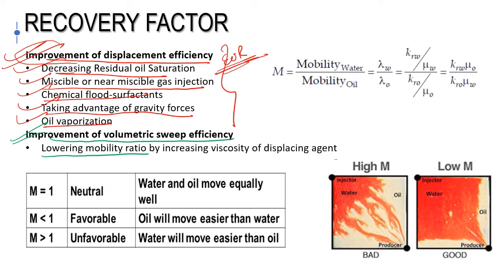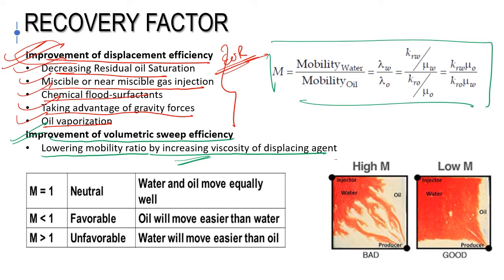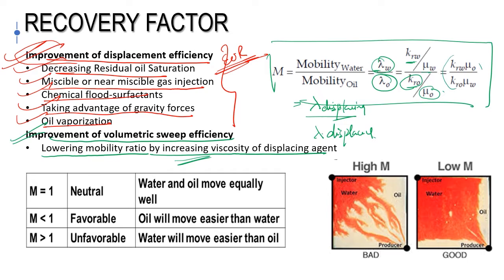To improve volumetric sweep efficiency, I go for lowering the mobility ratio by increasing the viscosity of the displacing agent. Mobility ratio M is the ratio of displacing phase mobility to displaced phase mobility — water to oil. Lambda of water equals krw divided by water viscosity, and kro divided by oil viscosity gives the oil mobility. When M equals 1 it is neutral; water and oil move equally. When M is less than 1 it is favorable; oil moves easier than water.